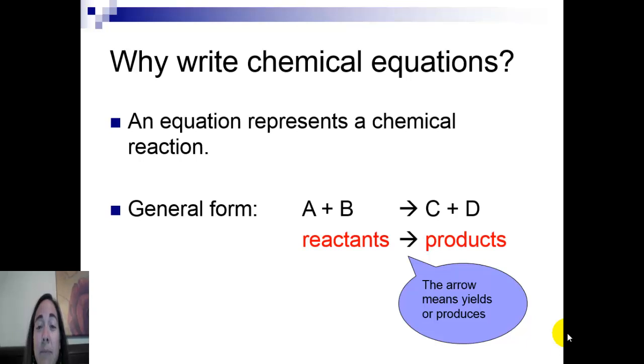And the products or the new materials that are made during the reaction on the right side of the arrow. The arrow is kind of like an equal sign in a math equation. This is what separates the beginning materials from the final materials. The arrow simply means that A plus B yields or produces the new products C and D.